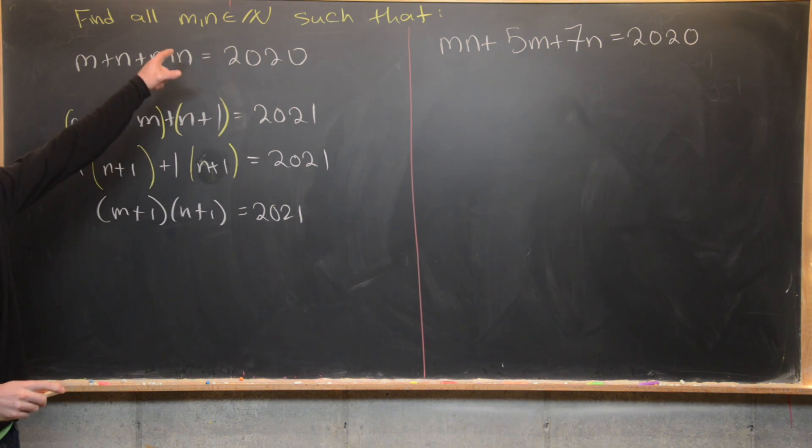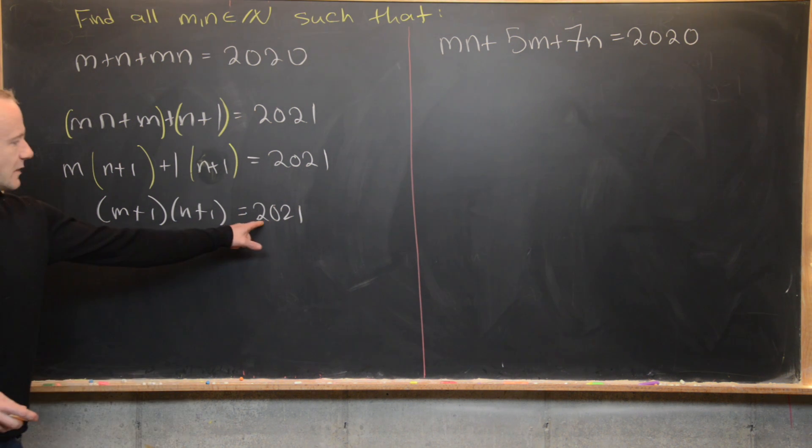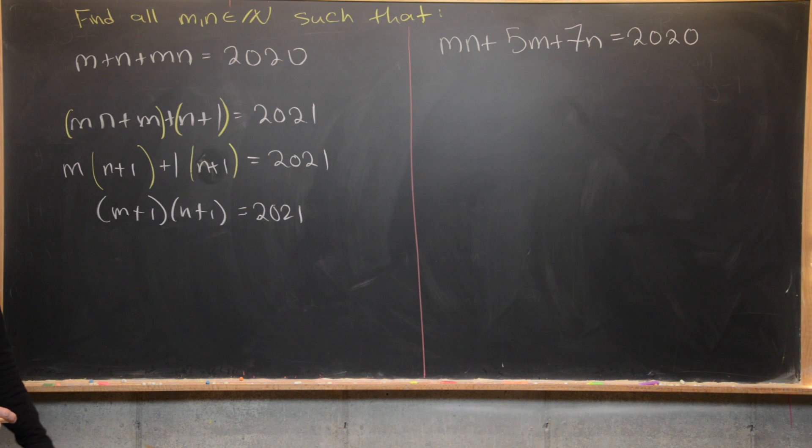Now since we're dealing with positive integers here, that means that m plus 1 and n plus 1 are both strictly bigger than 1. Again, that's because m and n are both bigger than or equal to 1. So now we might want to think about how this 2021 factors.